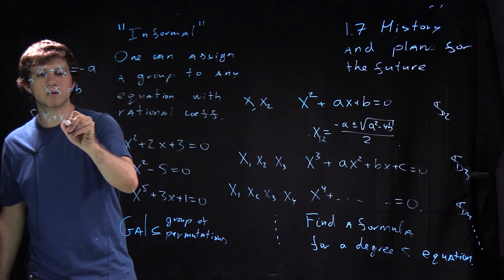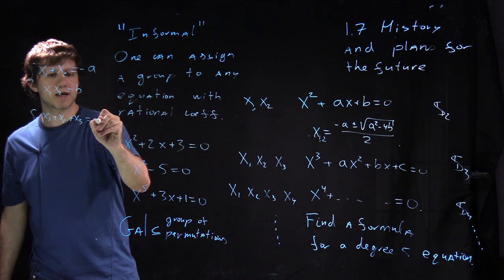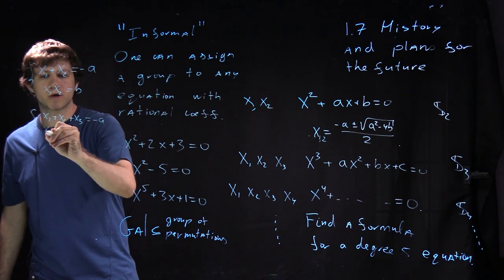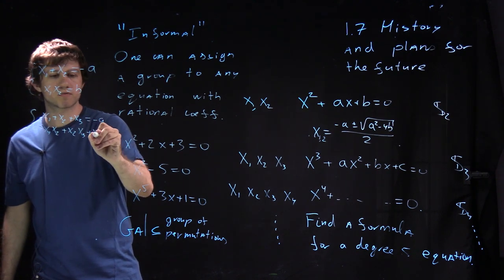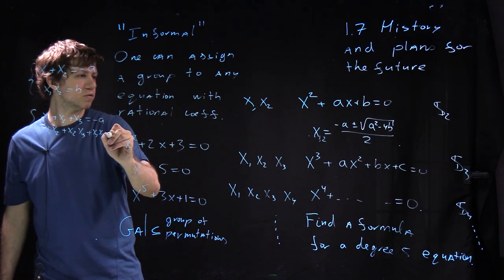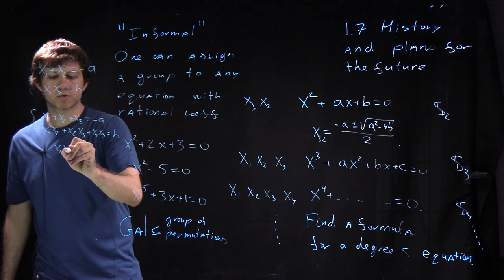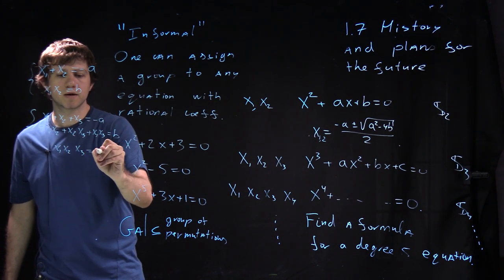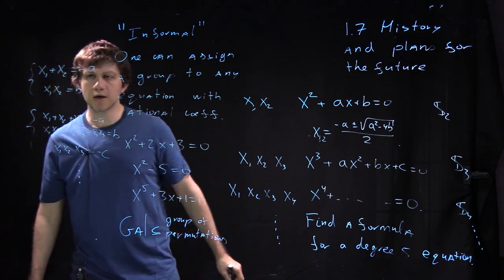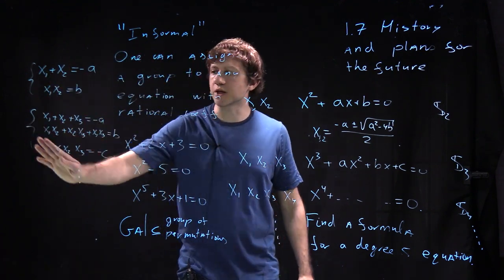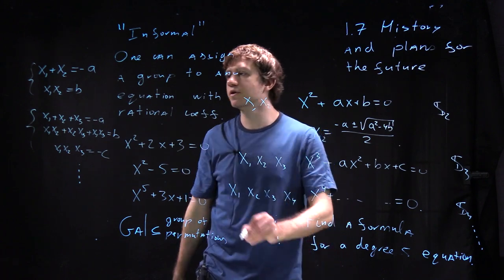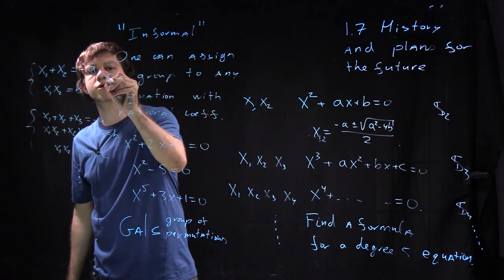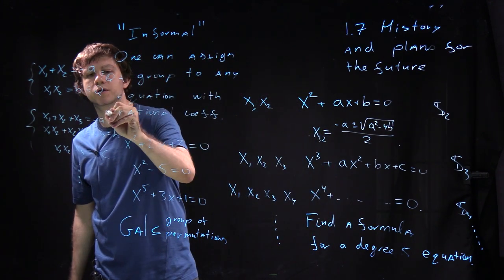And similarly similar equations hold if you take degree 3 for instance. x1 plus x2 plus x3 equals minus a, x1 x2 plus x2 x3 plus x1 x3 equals b, x1 x2 x3 equals minus c and so on. So notice that these relations and I said equations with rational coefficients so these numbers are actually rational. All of them are rational here.